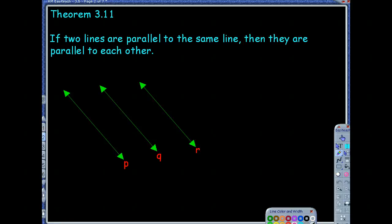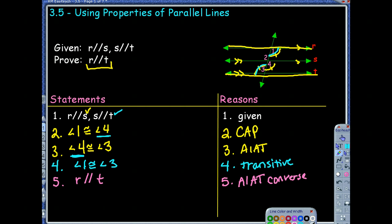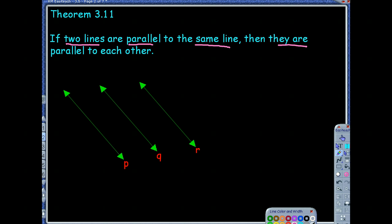It's a conditional statement. It says: if two lines are parallel to the same line — kind of like the last slide, notice line R and line T were both parallel to the same line — then those lines are going to be parallel to each other. Which again was kind of that no-brainer we already knew.